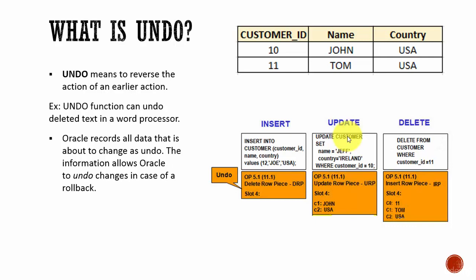What is an undo? In simple terms, undo means whatever action we have performed, just reversing that action is an undo. For example, you have deleted text in a Word document — if you do an undo, whatever the deleted text will reappear. In the same way, Oracle also records all the data that is about to change. Before making any change, Oracle will take the data and record that data, and that data is called undo data.